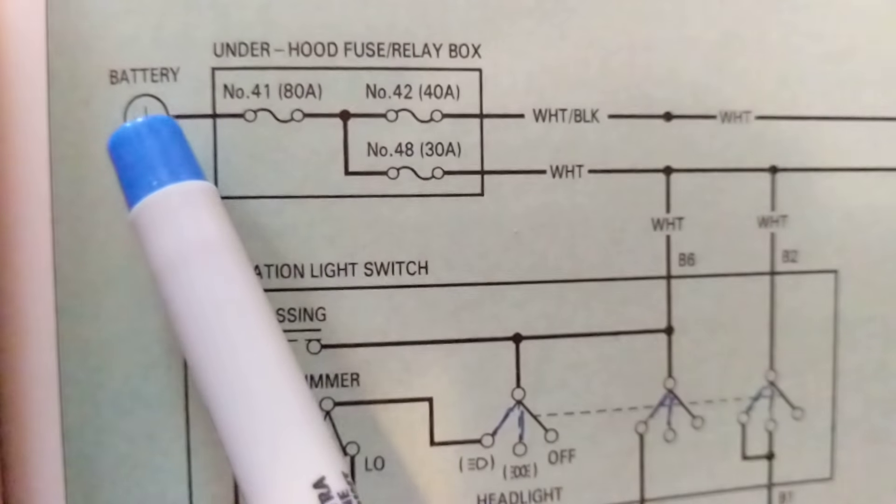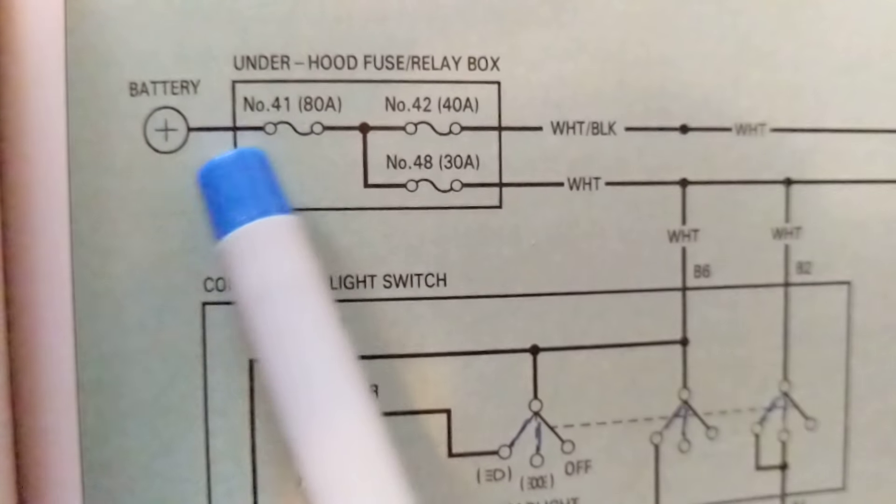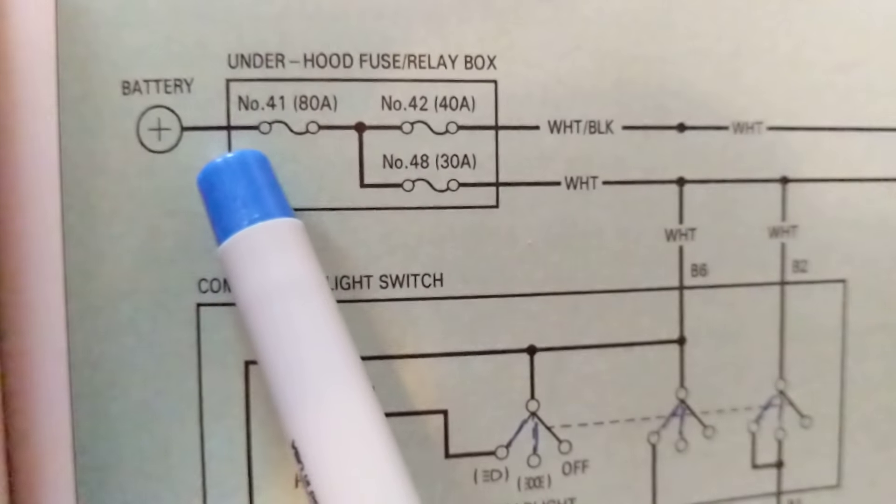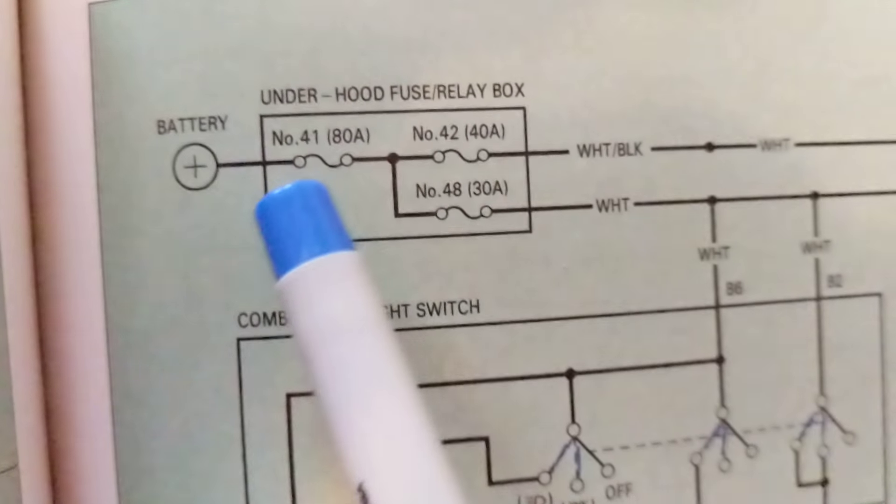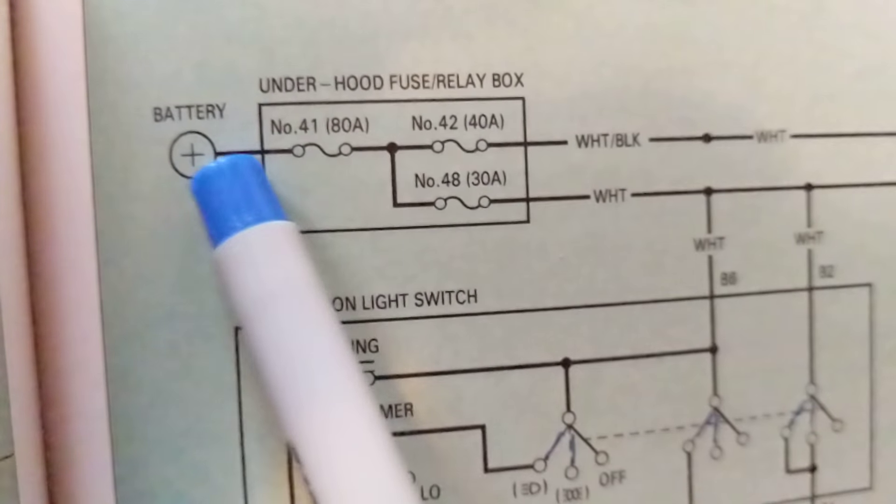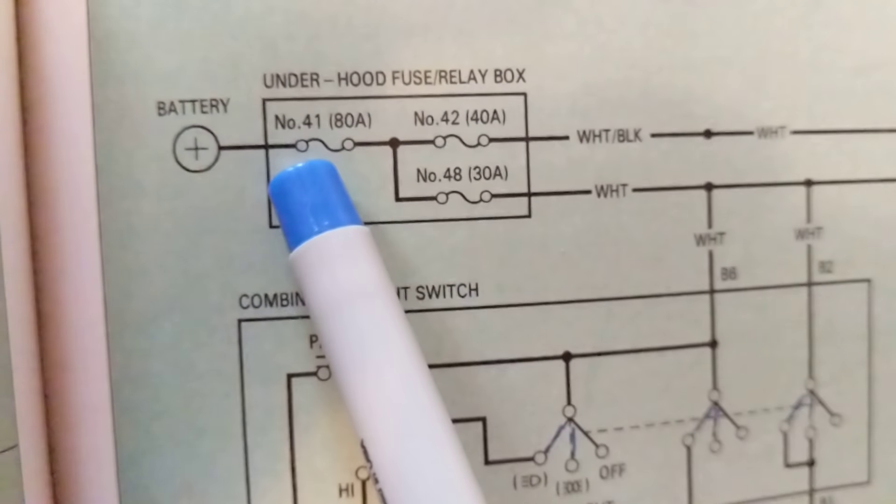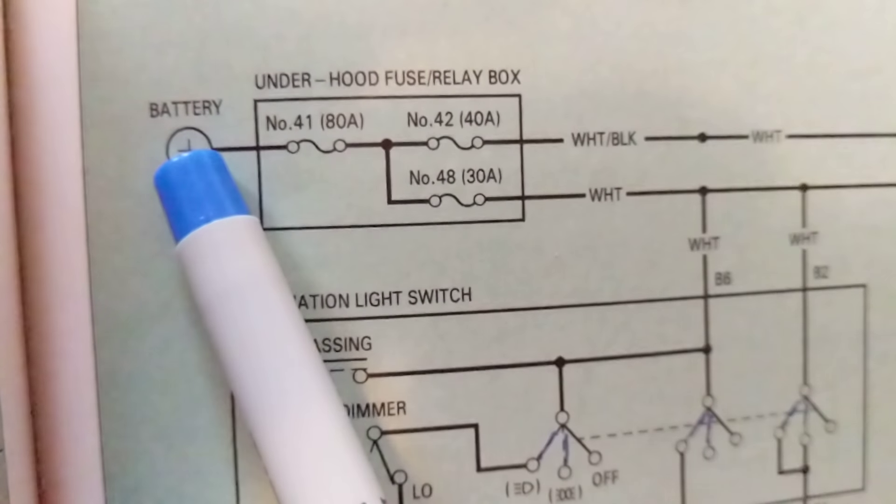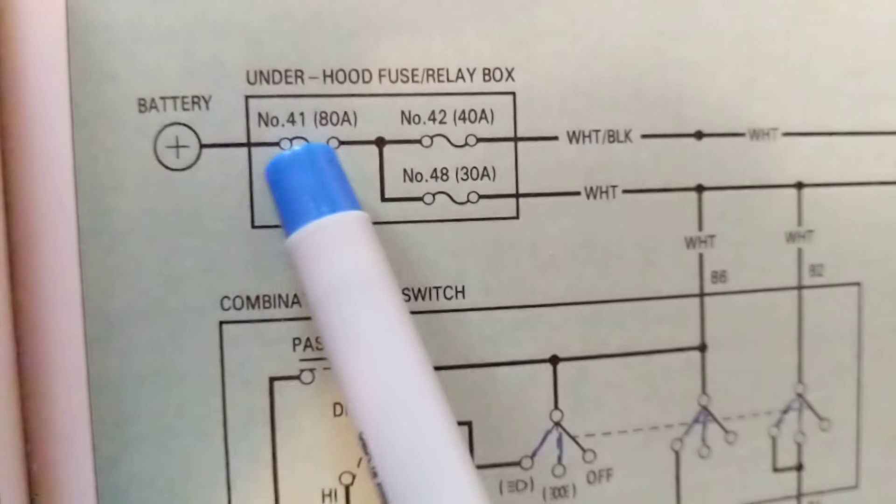So like we said from the battery we have a connection. Again a connection doesn't mean how many wires, somebody asked me this and it was a good question. A connection means I make a connection from here to here. It could be two wires together, it can be three wires together, it could be one wire together.